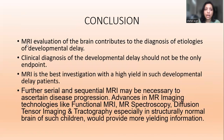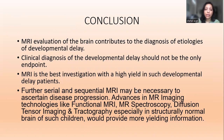Conclusion. MRI evaluation of the brain contributes to the diagnosis of the etiology of developmental delay. Clinical diagnosis alone should not be the only endpoint. MRI is the best investigation with a high yield in developmental delay patients. Serial sequential MRI may be necessary to ascertain disease progression. Advances in MRI imaging — including functional MRI, MR spectroscopy, DTI, and diffusion tractography — especially in structurally normal brains of such children, should provide more diagnostic information.